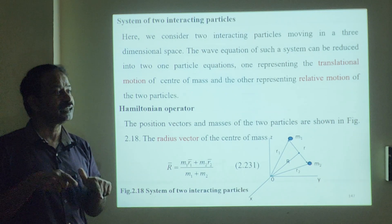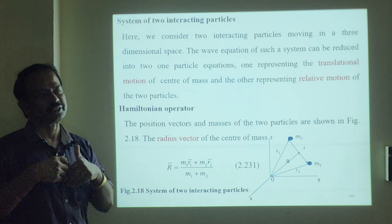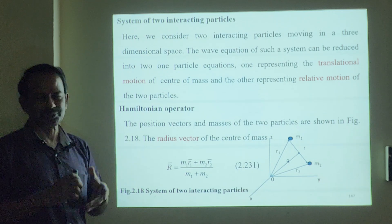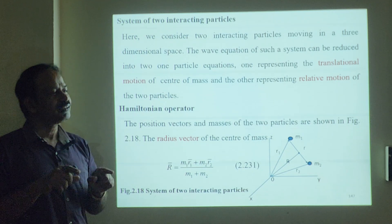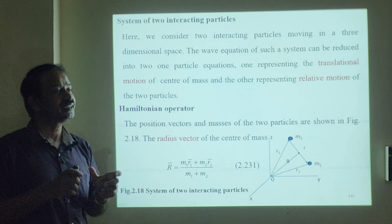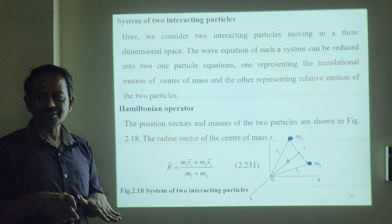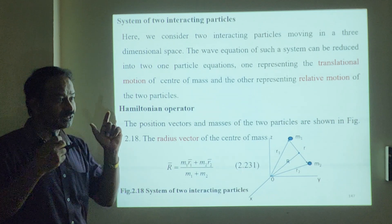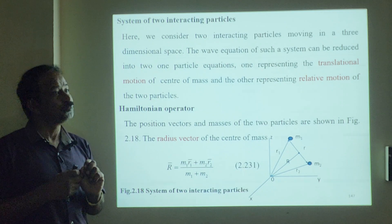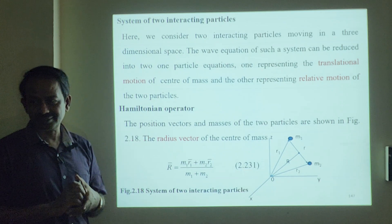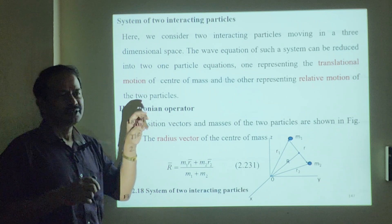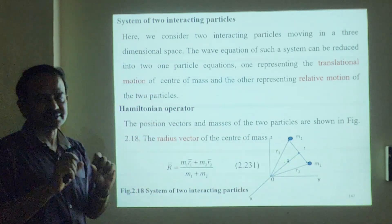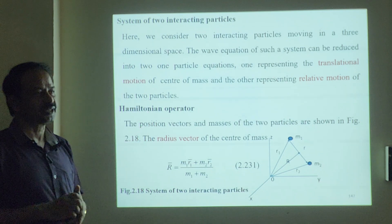But suppose if we use powerful telescopes, then it will really appear as two stars — binary stars. They say that more than 80% of stars will be binary stars, but for us it looks like only a single star. So, something like that — we have two interacting particles in three dimensional space.